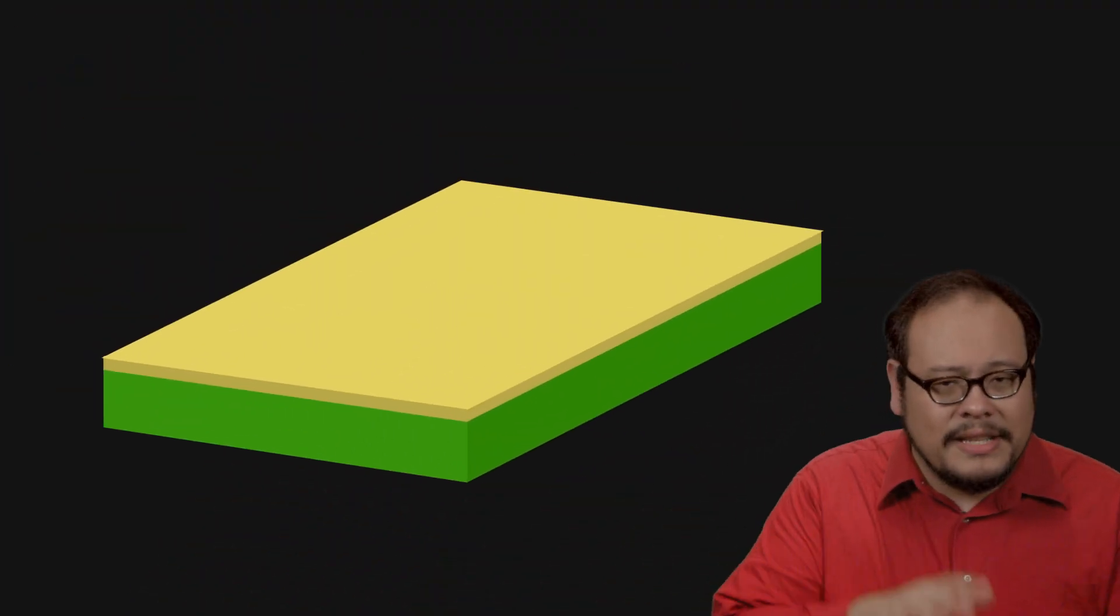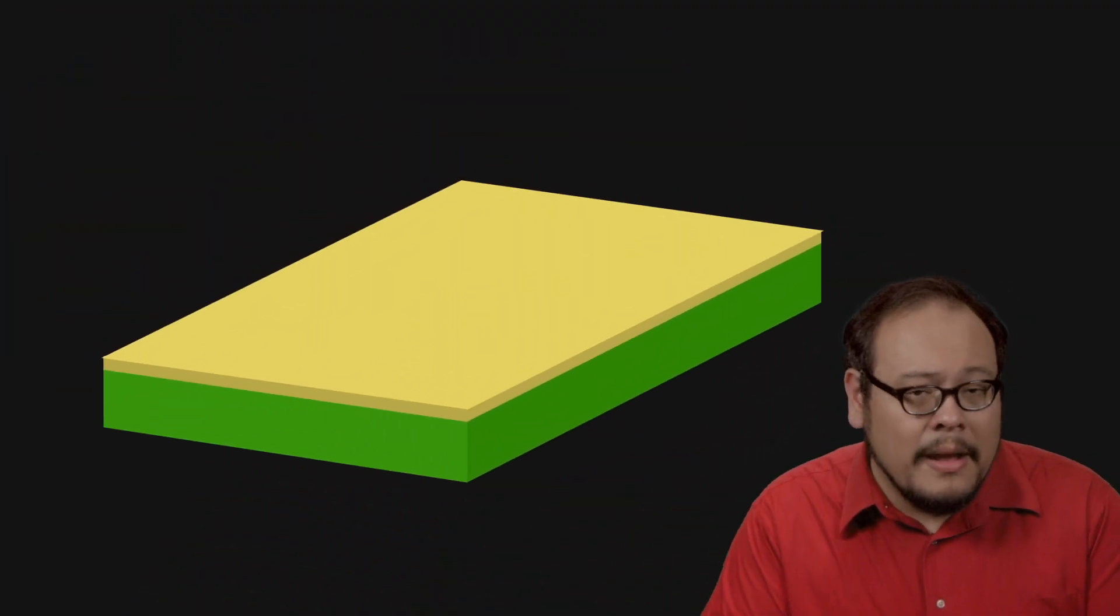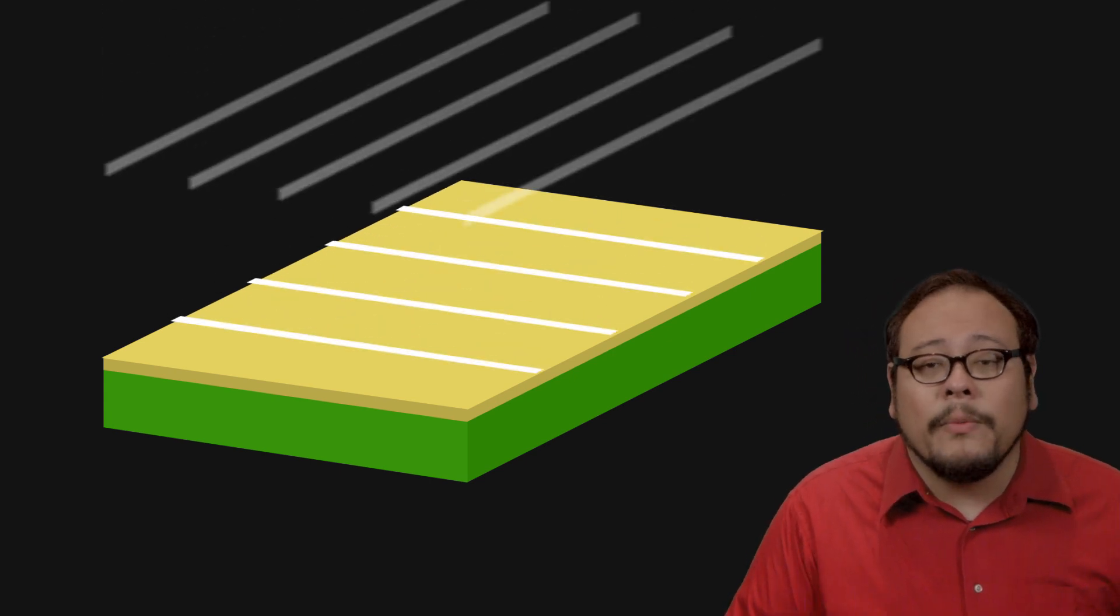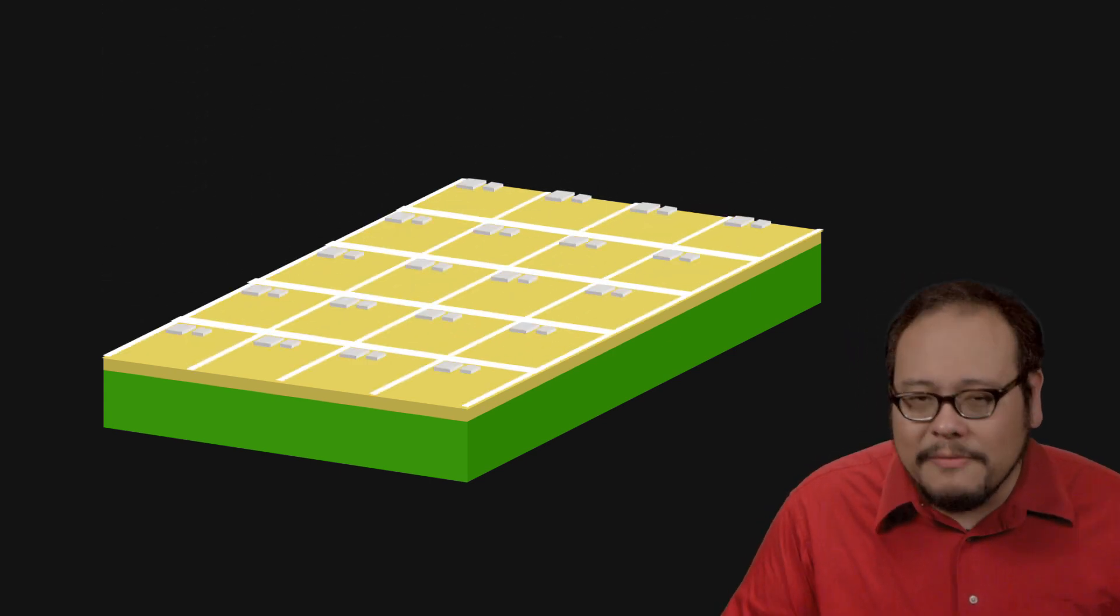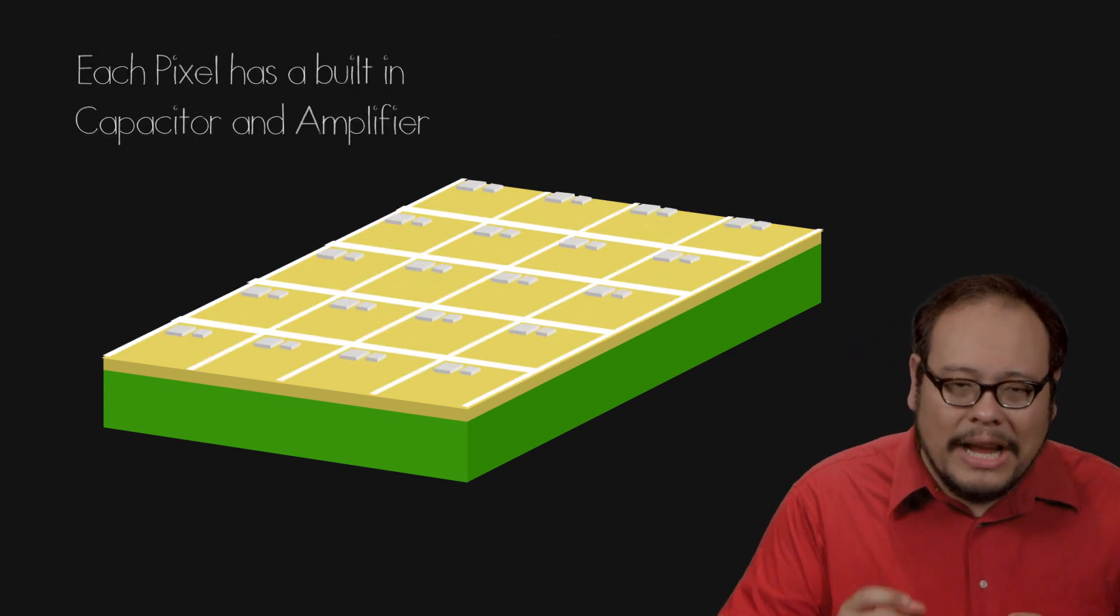Much like a CCD, a CMOS sensor is made out of a single slab of silicon. But instead of shuttling electrons row by row, each pixel has a small capacitor and a signal amplifier.